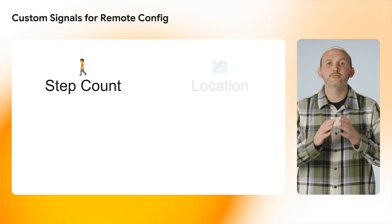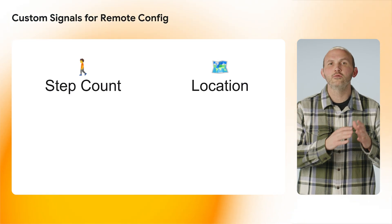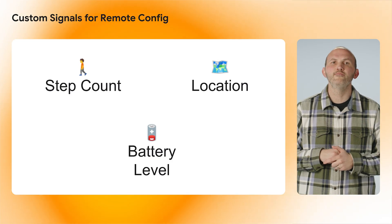Outside the traditional signals you can get from analytics and the platform information, you can also set your own custom key-value pairs based on the information on the client device. This could be things like step count, current location, or battery level information. This information can then be paired with the already available analytics information to return messages to the user based on device status and analytics information.